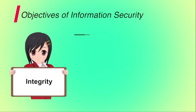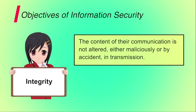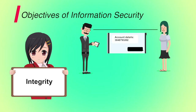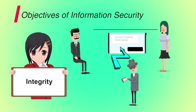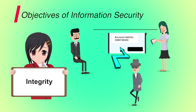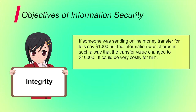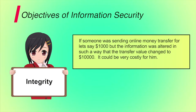Second is integrity. It involves protection against improper information modification or destruction. A loss of integrity is the unauthorized modification or destruction of information. For example, suppose you are sending your account number to your friend to transfer money. If an attacker modifies the account number and places his account number in place of yours, then the integrity of the message breaks. Also, if someone was sending an online money transfer for $1,000 but the value was altered to $10,000, it could be very costly. So the integrity of the message should be maintained for secure transmission.